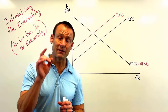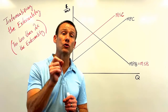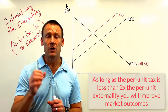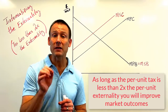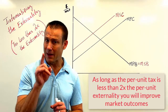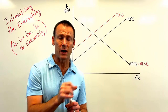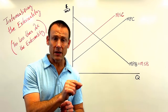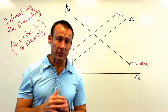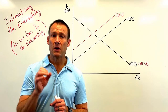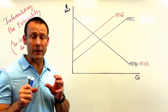The answer is yes, as long as your per unit tax is not more than 2x — two times the size of the per unit externality — you're going to do more good than harm. You're going to decrease deadweight loss and increase social surplus. However, if your per unit tax is more than 2x your negative per unit externality, you're going to do more harm than good; your deadweight loss is going to increase and your social surplus is actually going to decrease.